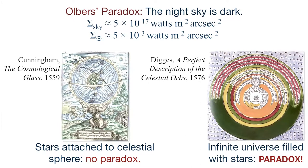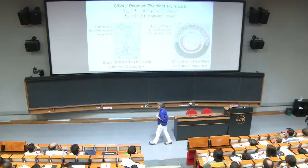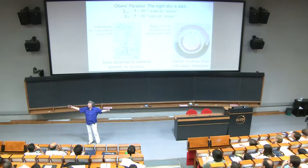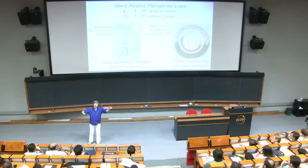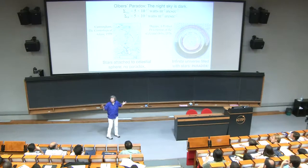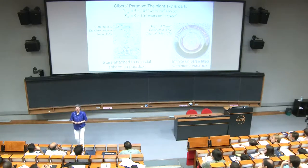For most of human history, people did not think the darkness of the sky was paradoxical at all. In the geocentric model of the ancient Greeks, the night sky was dark because there was a celestial sphere — a thin spherical shell centered on the Earth — that is dark aside from some thousands of little bright points of light attached to it, the lights we call stars. No paradox there: the ancient Greeks said there are only a few thousand stars because they are all embedded within the celestial sphere.